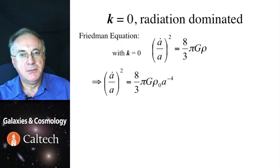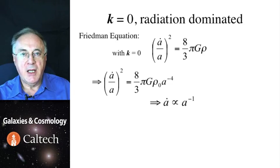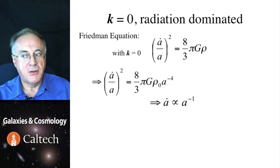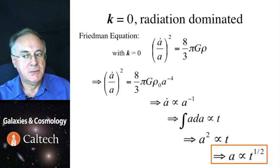So here is its Friedman equation, which again we can rewrite in the following form. And from that we see that the time derivative of scale factor is inversely proportional to the scale factor itself. That too is an easy one to integrate. And the solution is that the universe expands according to a square root of the time.